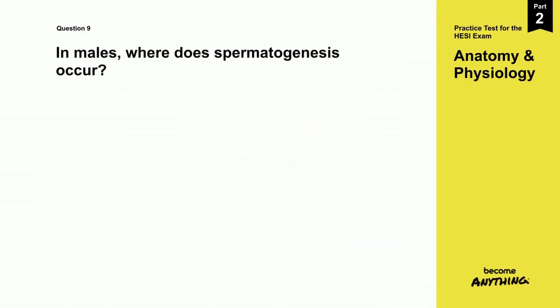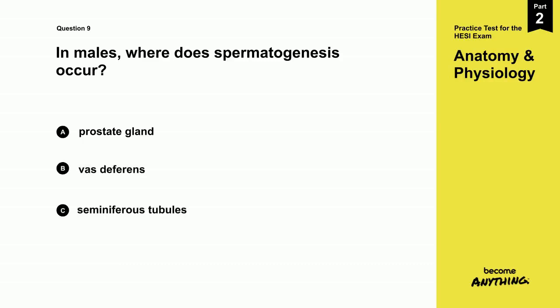Question 9. In males, where does spermatogenesis occur? A. Prostate gland. B. Vas deferens. C. Seminiferous tubules. D. Urethra.